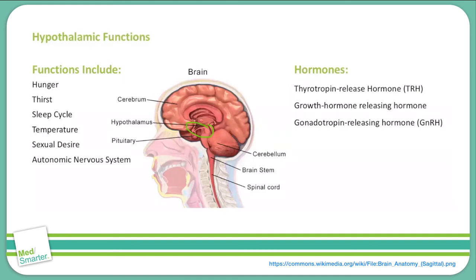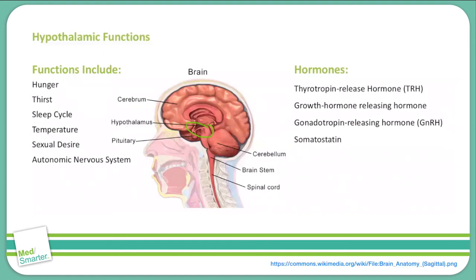You also need to know that the hypothalamus synthesizes and releases somatostatin, also known as growth hormone inhibiting hormone. It acts to antagonize growth hormone, and also functions to inhibit the secretion of pancreatic exocrine hormones and gastric acid secretion.